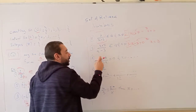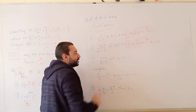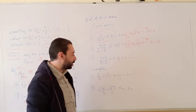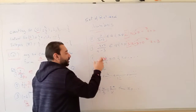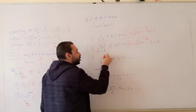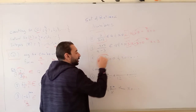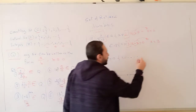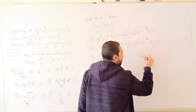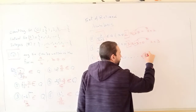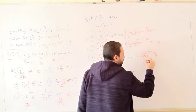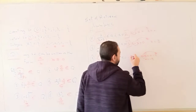(x plus 5) over (x minus 9) equals 0. If x equals how much does the fraction equal 0? This means the numerator equals 0. So x plus 5 equals 0, and transferring positive 5 to the other side gives x equals negative 5.